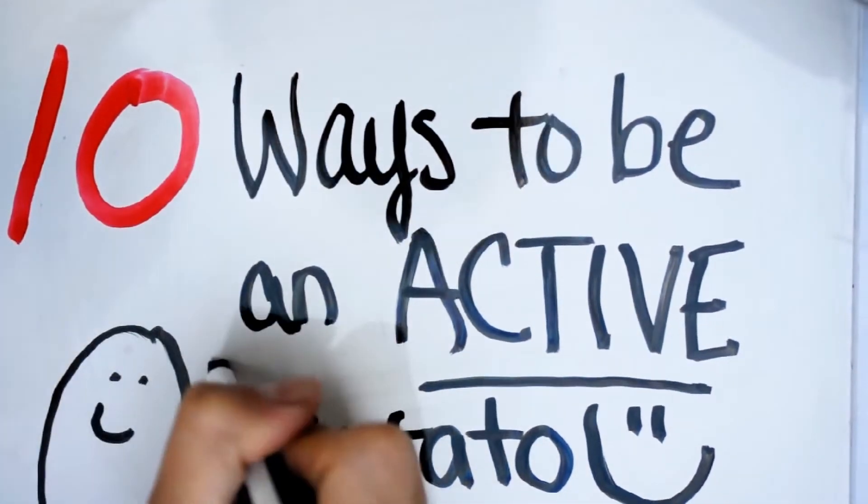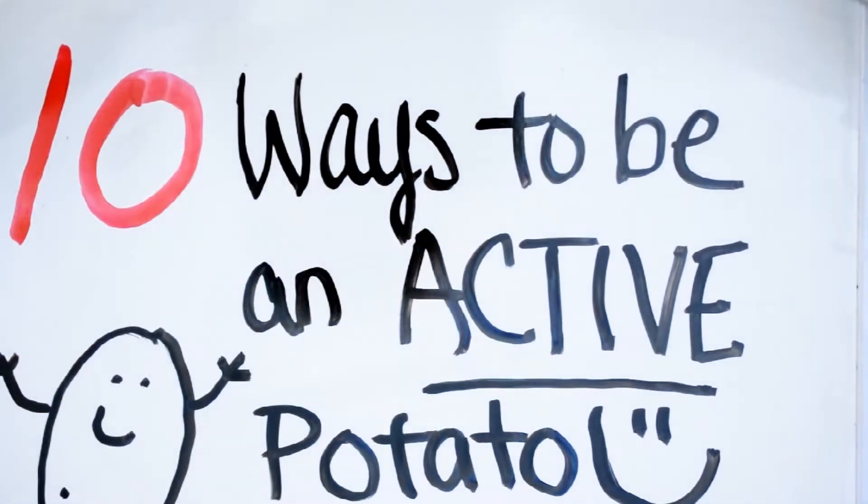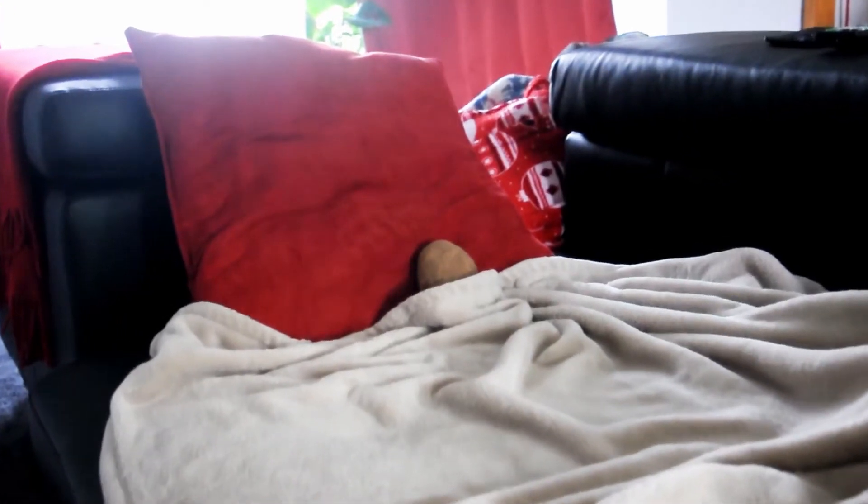Ten ways to be an active potato. Once upon a time, in a little town called Madison, there was a potato stuck at home. The potato didn't know what to do, so the potato took a nap. While the potato was napping, they had a dream about things they might do to have fun at home.